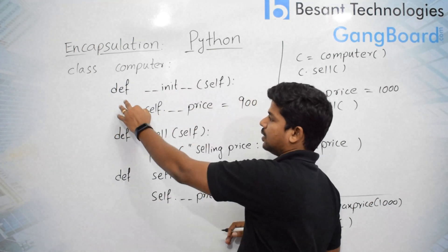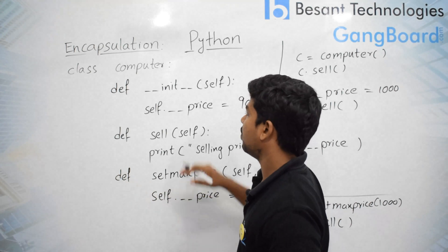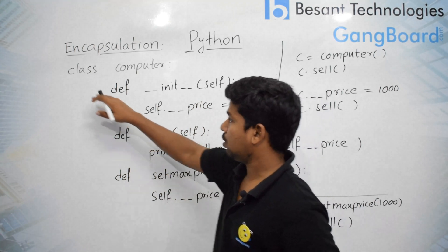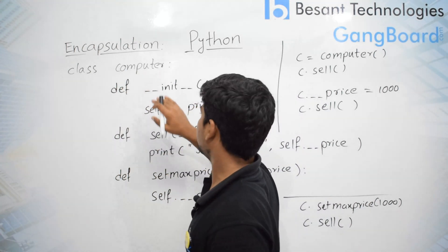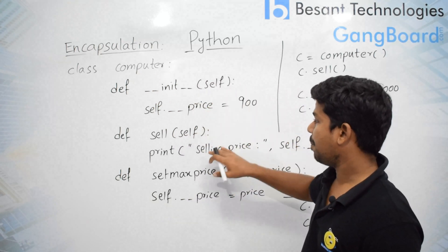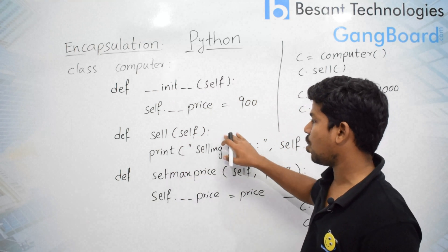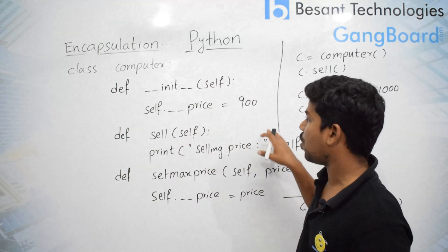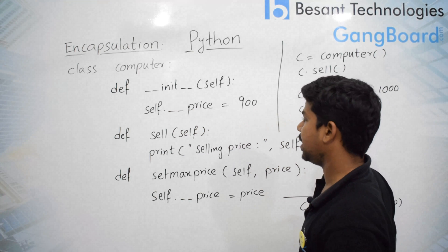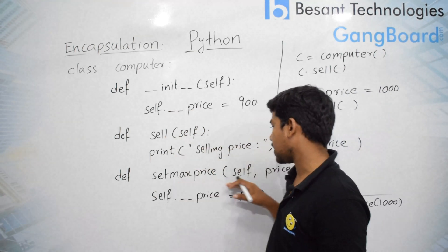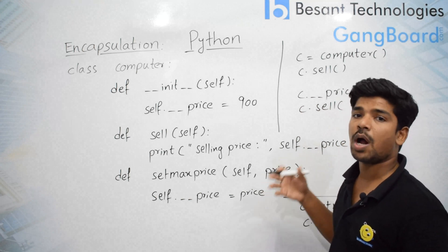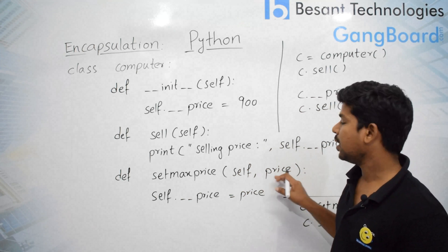Here you can see I have defined three methods: one is initialization, one is sell, and another one is set max price. I have defined a class called Computer. For the initialization I have taken self with no other arguments. For sell, also just self, and I am printing the value I have set here — self dot price. The next one is set max price, where I am taking another variable, price, asking the user what value is required.